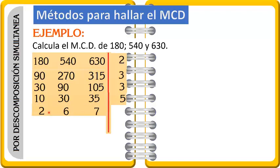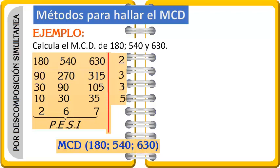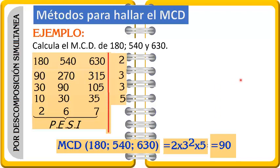Finalmente, 2, 6 y 7 ya no se puede dividir más. Estos números 2, 6 y 7 vienen a ser números primos entre sí. Para el máximo común divisor por el método de descomposición simultánea, no se llega hasta la unidad. Entonces se concluye que el máximo común divisor de 180, 540 y 630 es igual a la multiplicación de 2 × 3 × 3 × 5, lo que es igual a 90.